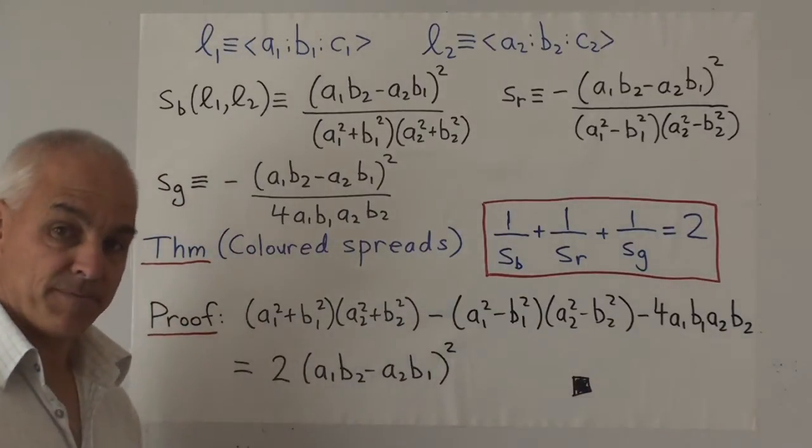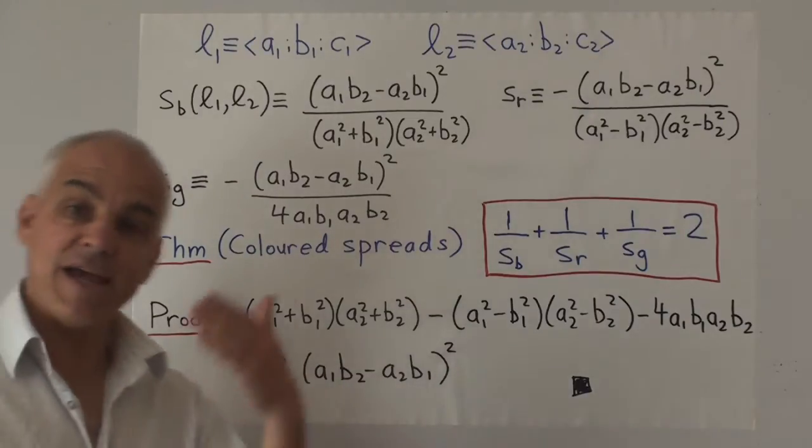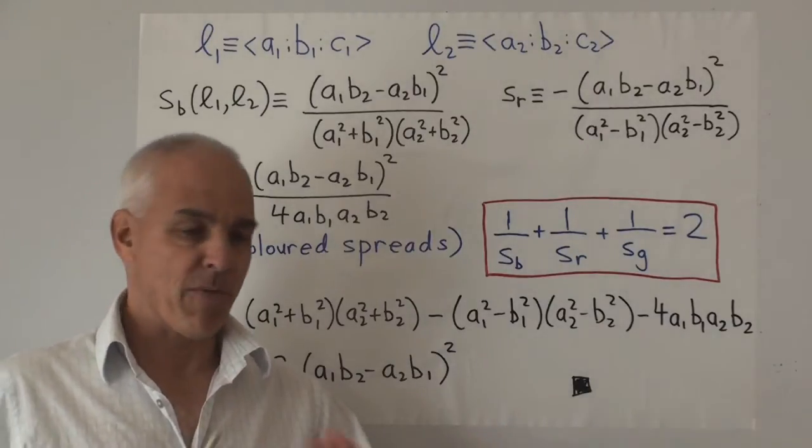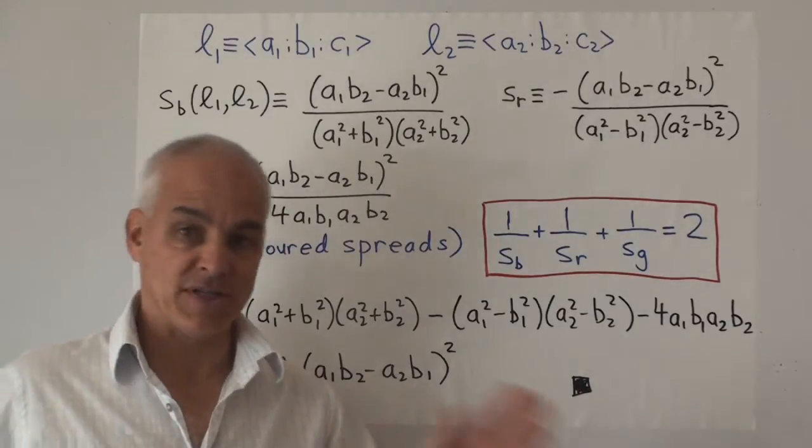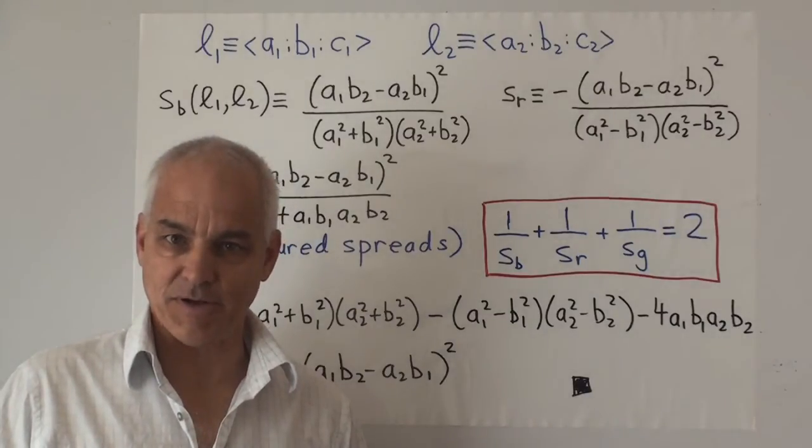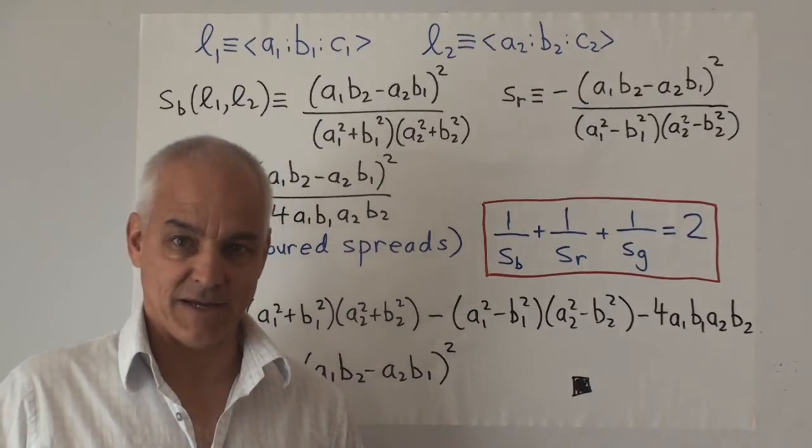Now the spread between them. The spread is a number that we associate to those two lines. It replaces the notion of angle. If you stick with angles, chromo geometry is almost invisible. You don't see it, which is why people have not discovered this remarkable theory up till now.